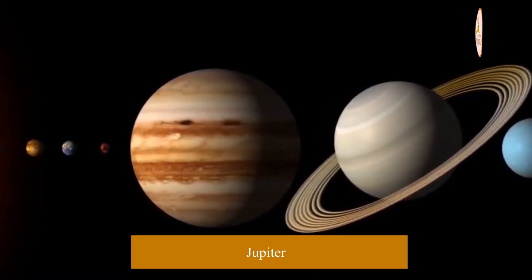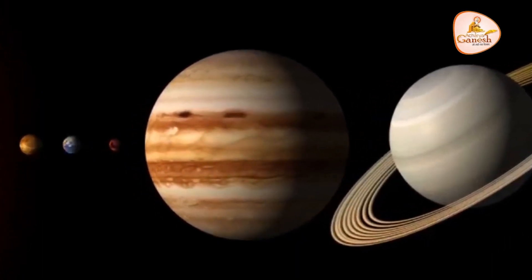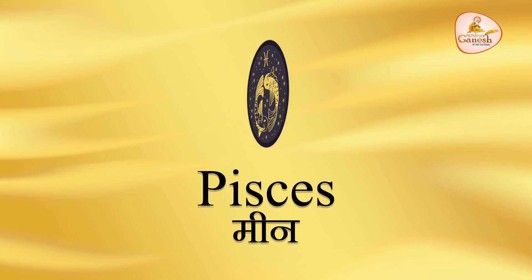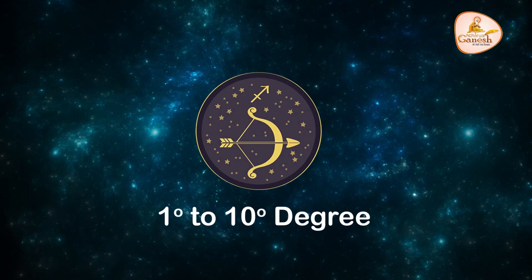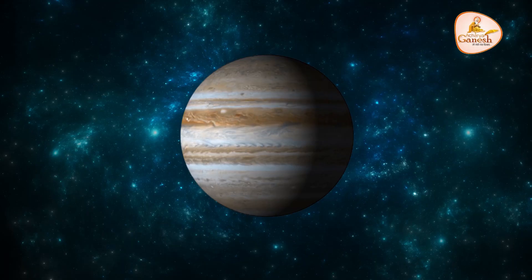Let's take the example of Jupiter. Jupiter is the owner of two signs, Sagittarius and Pisces. But Sagittarius is the sign that Jupiter feels closest to its traits — where it's actually going to perform its duties in a highly efficient manner. When Jupiter is placed from 1 to 10 degrees of Sagittarius, that's when it's in its Moultrikon sign. From 11 to 30 degrees, Jupiter is in its own sign. That's the difference between Moultrikon and own sign.